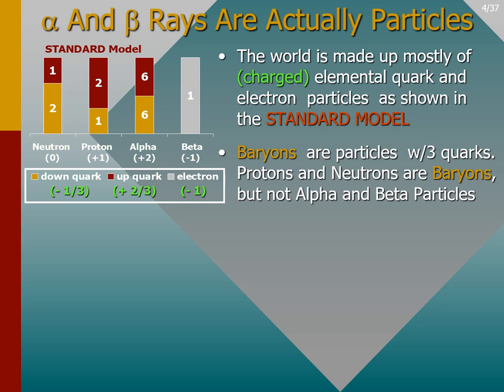This model is known simply as the standard model. In this model, the world is made up mostly of three kinds of charged elemental particles: the down quark, the up quark, and the electron. A baryon is a standard model particle constructed from any three quarks. The proton and neutron are both baryons. The neutron consists of one up and two down quarks with a net charge of zero, while the proton consists of one down and two up quarks with a net charge of plus one.